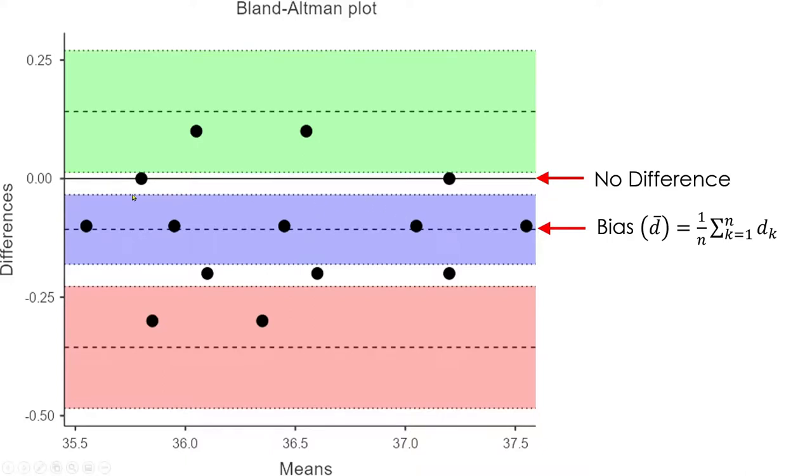As we can see, this no difference line is not included in this 95% confidence interval of bias, which means that the bias of 0.1 degrees Celsius is actually statistically significant, something that you cannot just ignore. The Bland-Altman plot will tell you how much bias the new method has from the old method or the reference method statistically.